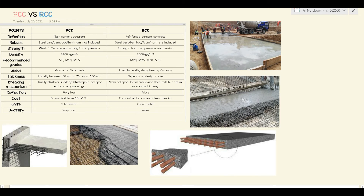The breaking mechanism of PCC is usually sudden and catastrophic, because it has no steel bars inside. It collapses without any warning — it suddenly cracks and there's a catastrophic breakdown of the structure, which is very dangerous. In the case of RCC, we have steel bars which provide tensile strength, so RCC has a slow collapse. Initially cracks develop and then it slowly fails, but there's no catastrophic failure.